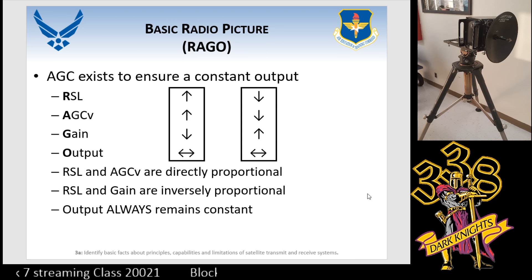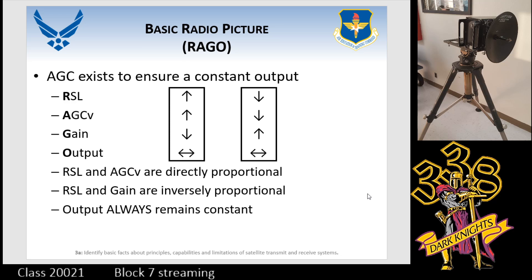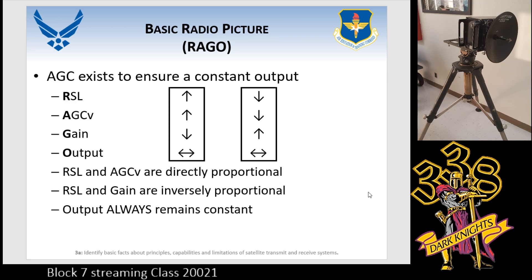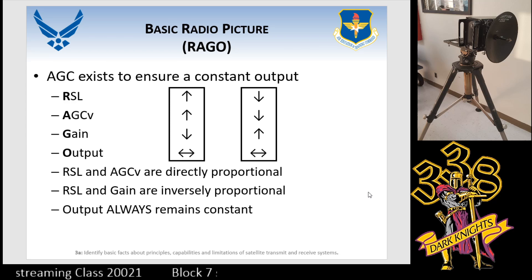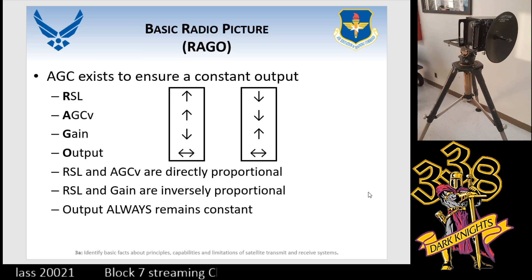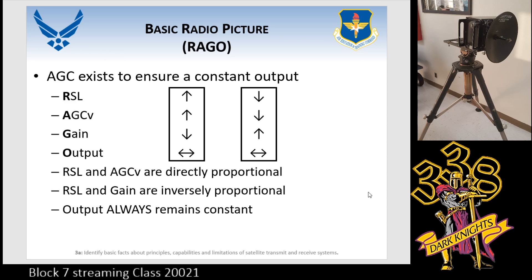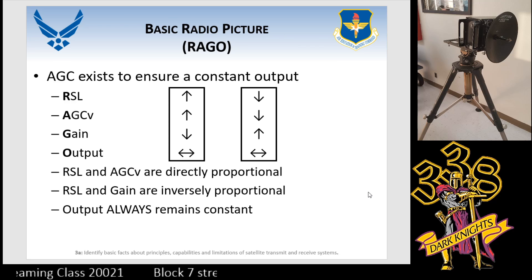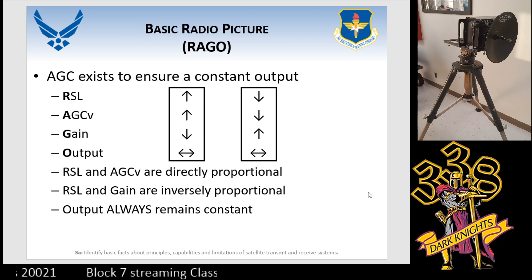We have something called RAGO: RSL, AGC, Gain, and Output. RSL — receive signal level — is the amount you're getting from the receive part on your Tisser. It gives you an indication of whether that is a strong or weak signal. It develops into a voltage in the AGC, and when it gets throughout the rest of the radio, it's going to either increase gain to bring the signal up or decrease it depending on that RSL. The whole idea behind AGC is to make sure your output is constant — for a variant RF input, you get a constant output.